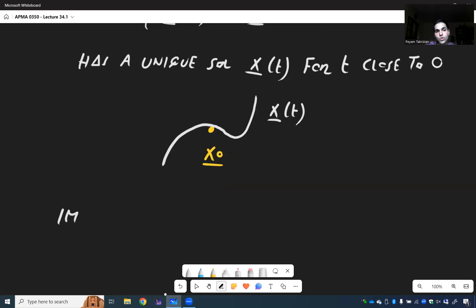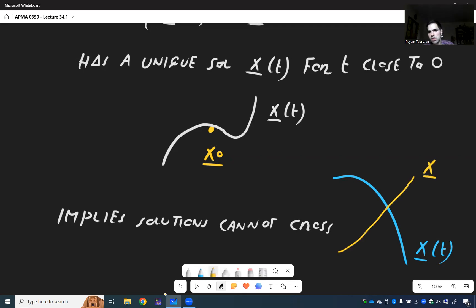And once again, this implies that solutions cannot cross. So we can't have a situation where one solution is like that and the other solution is like that. Because once again, if this is our initial condition, then the question is which solution do we pick? This one or this one? We don't know.